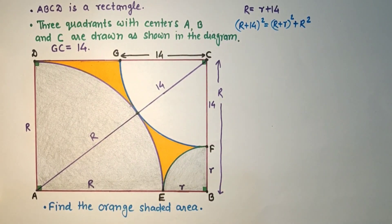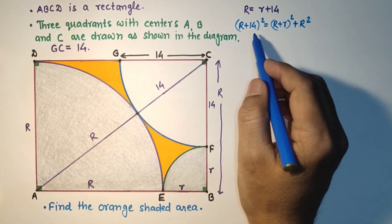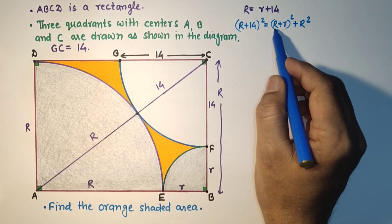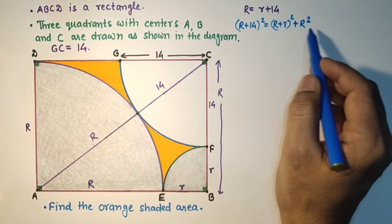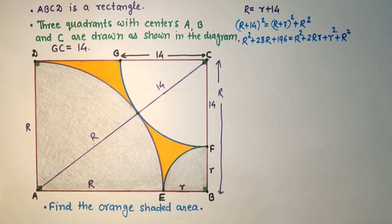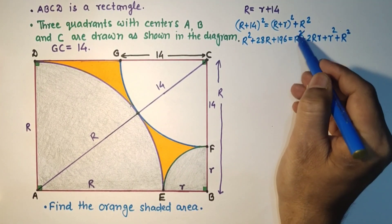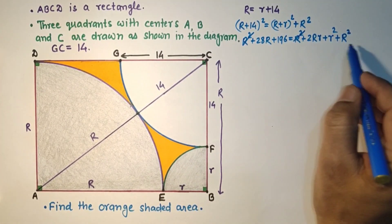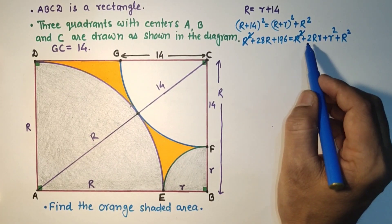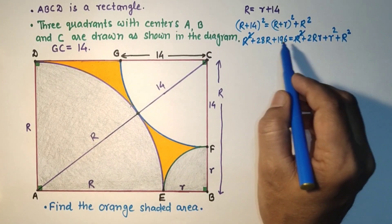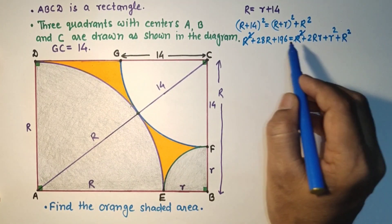Simplifying, we get r² + 28r + 196 = r² + r² + 2Rr + R². We can cancel the r² terms on both sides. If we simplify further it will be R² + r² + 2Rr − 28r − 196 = 0.